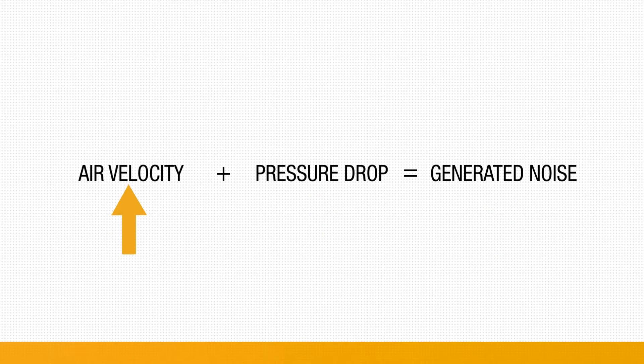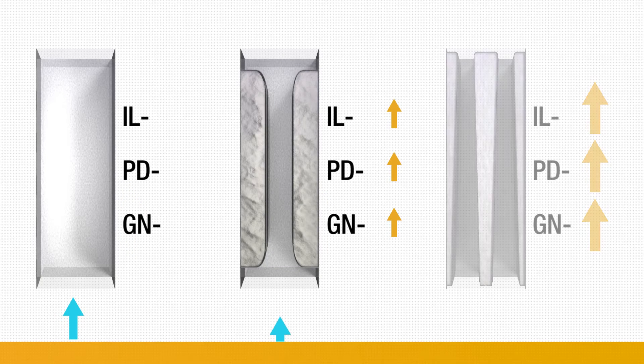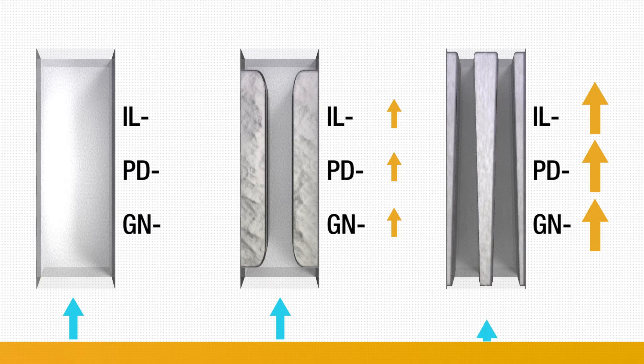A similar pattern is seen with air velocity. When air velocity through a silencer increases, the pressure drop and generated noise also increase. These patterns are seen when the air passage is being impeded by silencer baffles and additional airflow turbulence. While these relationships can be influenced using different baffle geometries and free open areas, the fundamental relationships still apply.